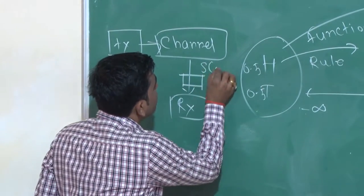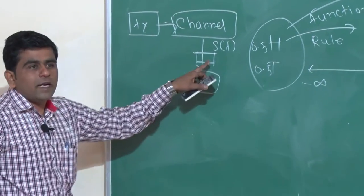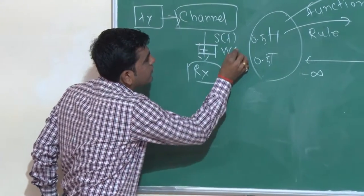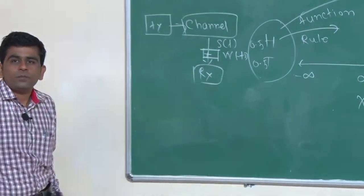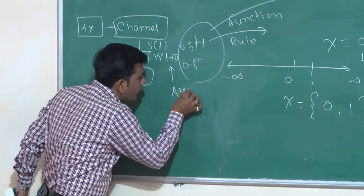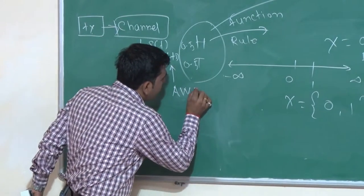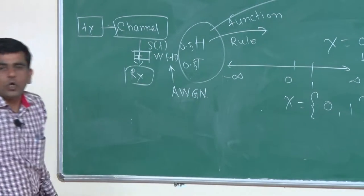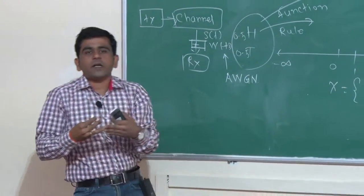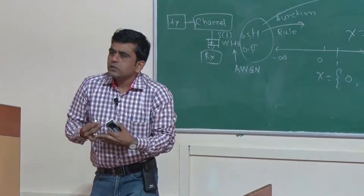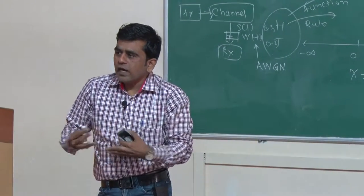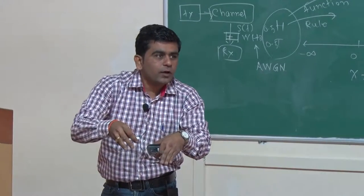So here your input signal which gets modulated, that is s(t), gets added with your noise w(t). We have to consider that this noise w(t) is having one particular structure, that is AWGN — additive white Gaussian noise. Here 'additive' means this noise is a combination of noise generated by your three components: your transmitter, medium, and your receiver. This noise is going to add into your message signal, that is your modulated signal.